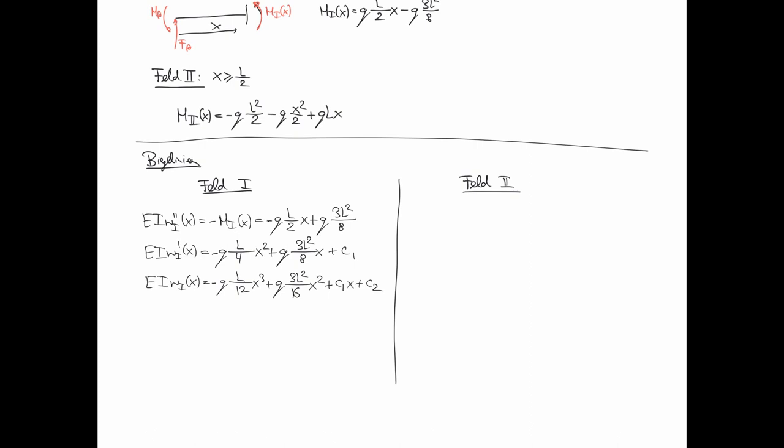Erstes Feld links, zweites Feld rechts, genau analog. Dann nennen wir die Durchbiegung aber auch W2 von x, wobei beim x muss man halt auch aufpassen, man muss genauso den Gültigkeitsbereich beachten wie bei den Feldern oben. Den habe ich jetzt nicht extra hingeschrieben, aber der gilt natürlich. Für links gilt x kleiner gleich L halbe, für rechts gilt größer gleich L halbe.